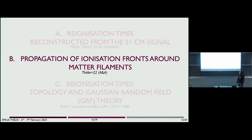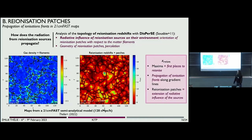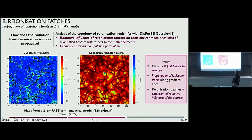Now that we have seen we can reconstruct this map of interest from observations, we can try to measure some statistics within it. First we wonder: how does the radiation propagate from the reionization sources? To answer that, I'm using 21cm-fast simulations. On the left you can see the density maps from which I extracted the matter filaments with DisPerSE. And here you can see the reionization redshift map from which I extracted the reionization patches I mentioned before. The aim is to compare the orientation of the matter filaments with the reionization patches.